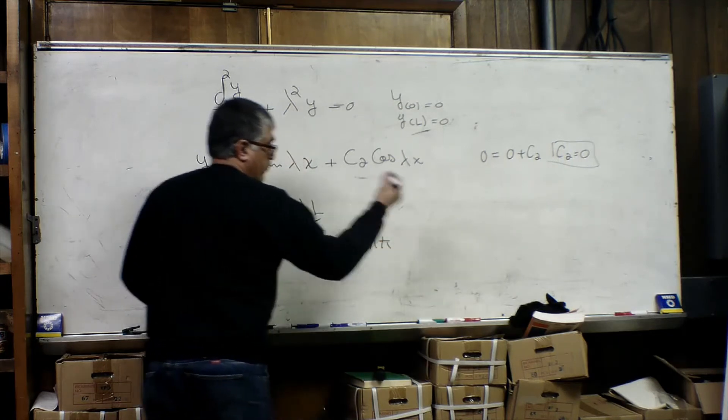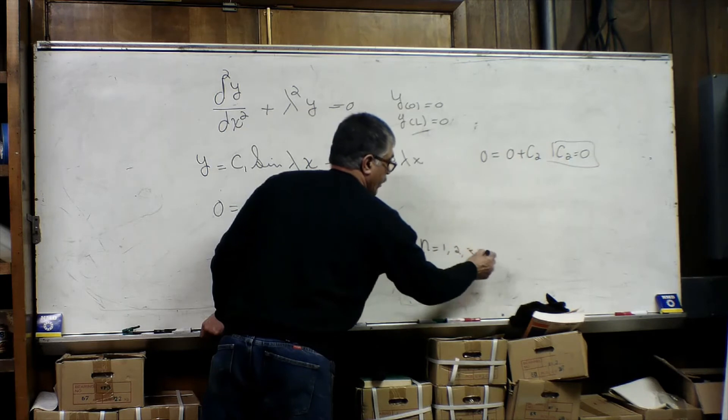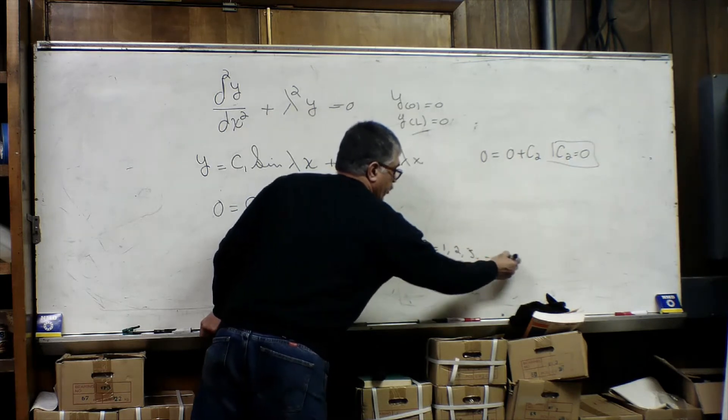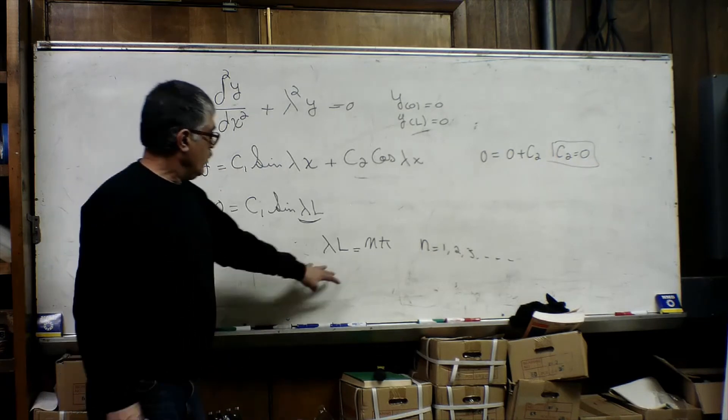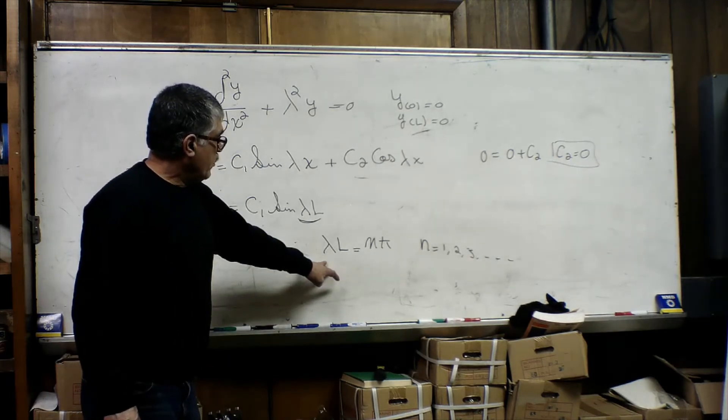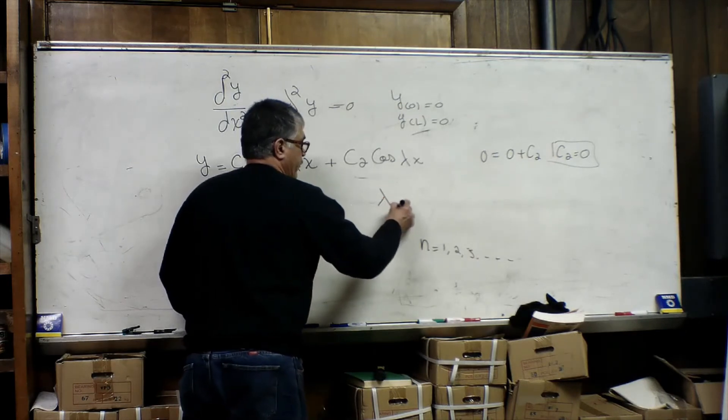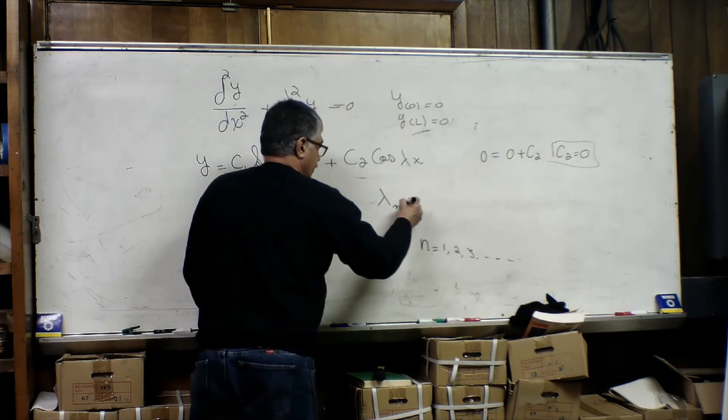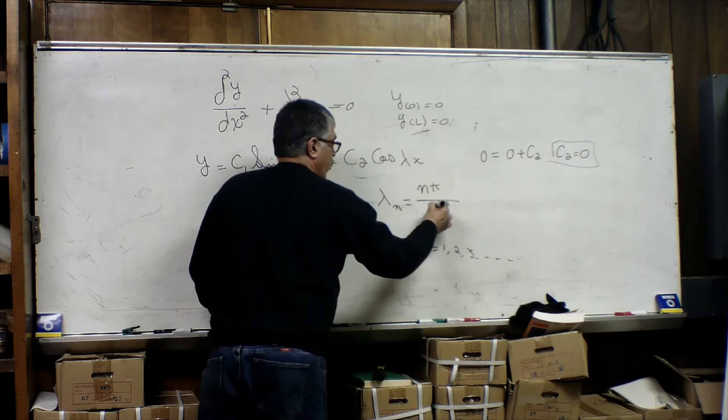Where n can be 1, 2, 3, any integer number. So the eigenvalues will be equal to n pi over L.